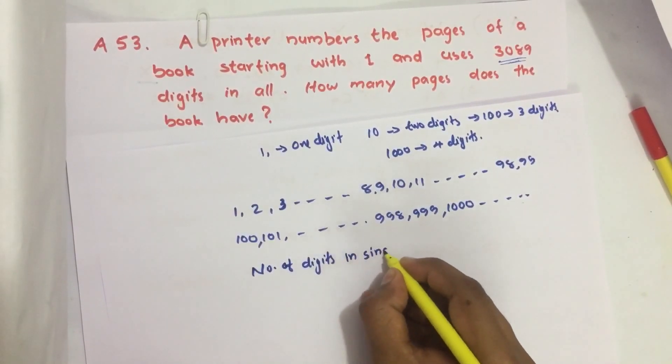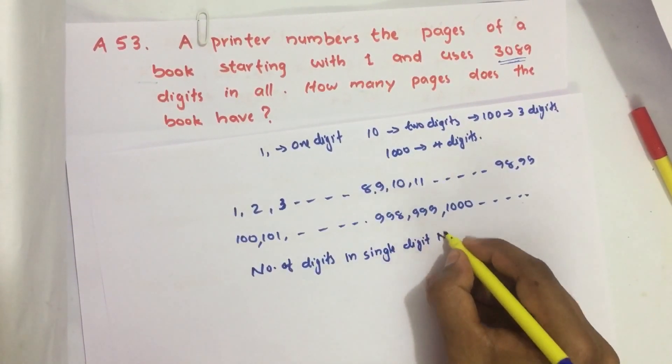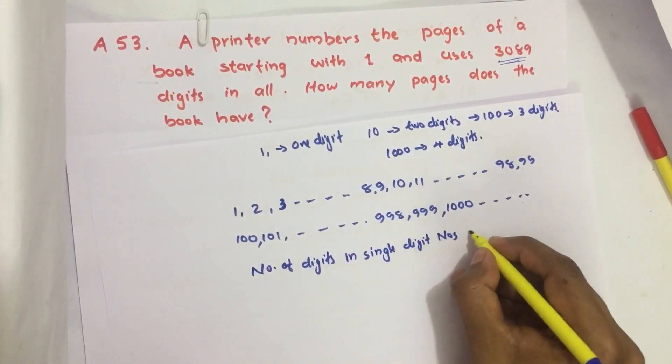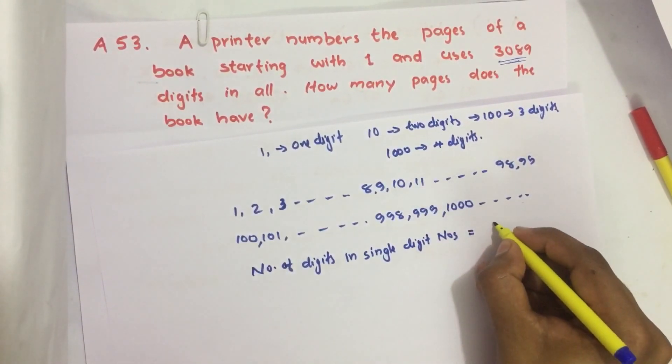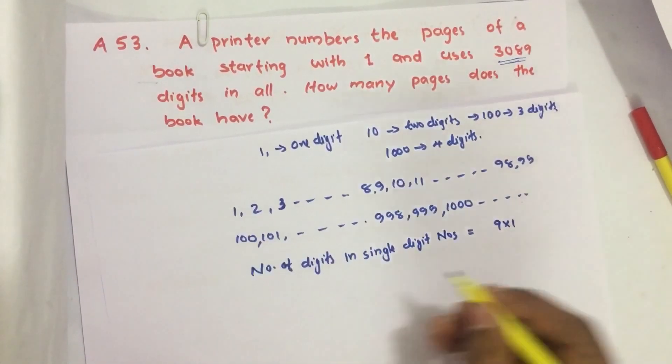For single digit numbers, there are 9 numbers from 1 to 9, and only one digit is used for each, which equals 9 total digits.